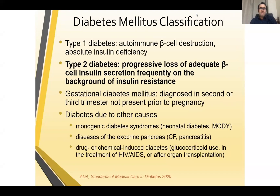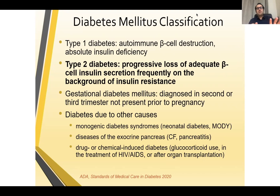The classification of diabetes has been evolving, but according to the current ADA guidelines, classification is basically type 1, type 2, gestational, and secondary to other causes. Type 1 diabetes is due to autoimmune beta cell destruction, resulting in absolute insulin deficiency, and the patient needs insulin from day one. Type 2 diabetes is progressive loss of adequate beta cell insulin secretion, frequently on a background of insulin resistance. Initially the patient is treated with oral medications, but at some point may need insulin as well.